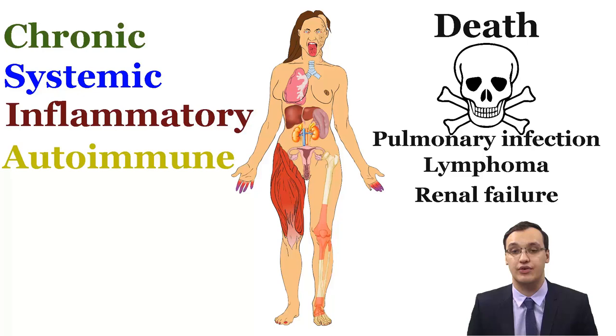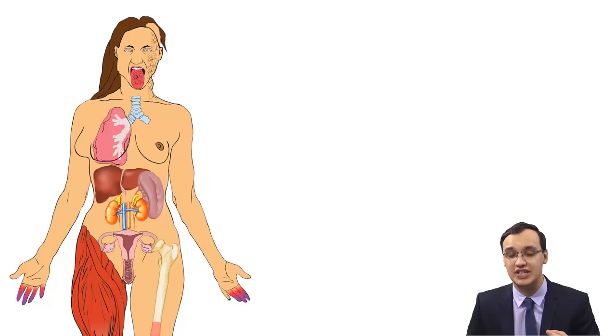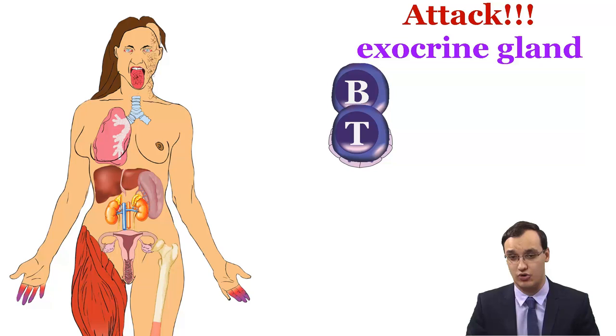This is an autoimmune disease, and in Sjogren's syndrome this means that the T and B lymphocytes of the immune system invade the exocrine glands in your body.